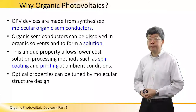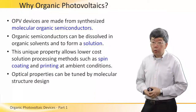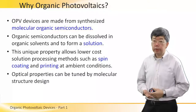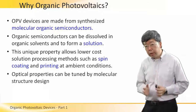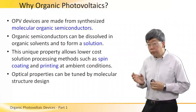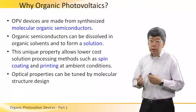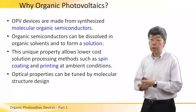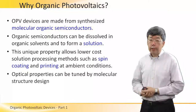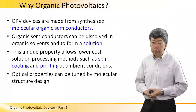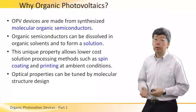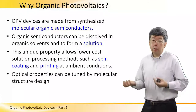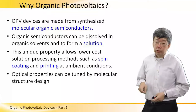So why do we want to use OPV devices? Firstly, OPV devices are made from synthesized molecular organic semiconductors. The main difference from amorphous silicon or polysilicon is that the material consists of individual molecules instead of a crystal material. Another very important reason is that these materials can be dissolved in organic solvents such as chlorobenzene to form a solution — a solution is a liquid, like water.